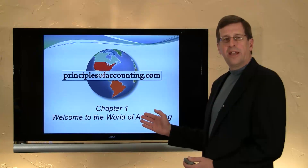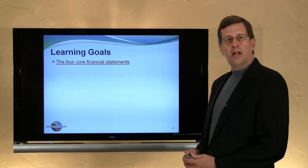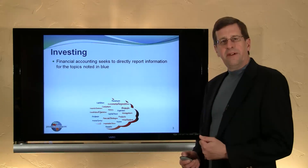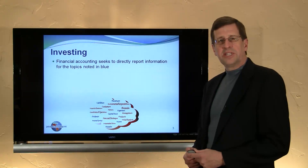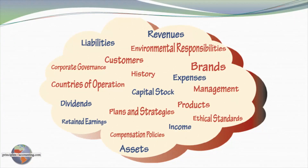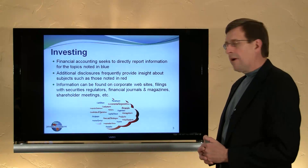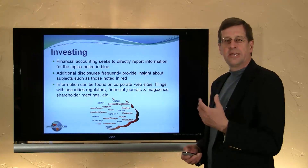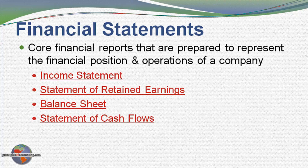I'm Larry Walther and this is principlesofaccounting.com, Chapter One. In this module we're going to look at the four core financial statements. Before we begin, consider what types of information you'd want about a company you were considering investing in. Financial information in blue includes revenues, income, and assets. Non-financial information in red includes corporate governance, environmental responsibilities, the management team, and brands. Accounting is focused primarily on providing the financial information; the other information can be found on corporate websites, SEC filings, and so forth.